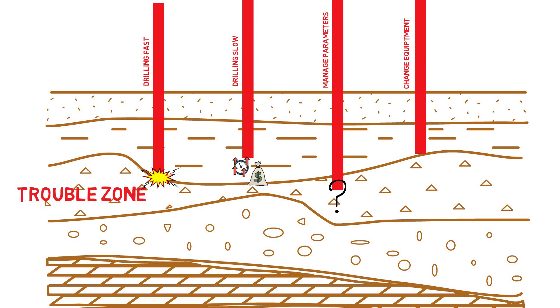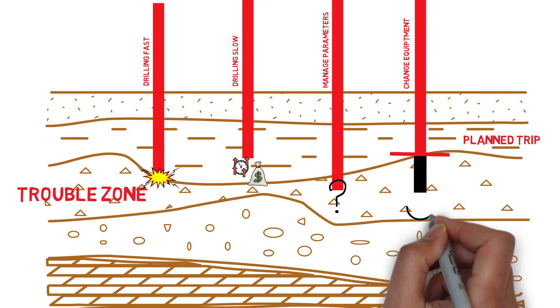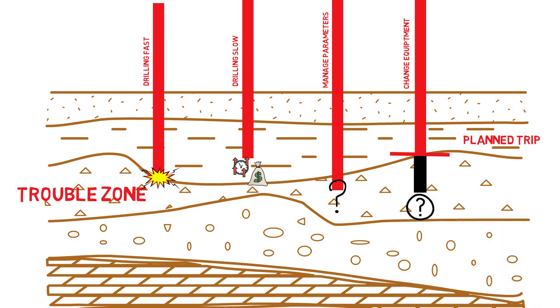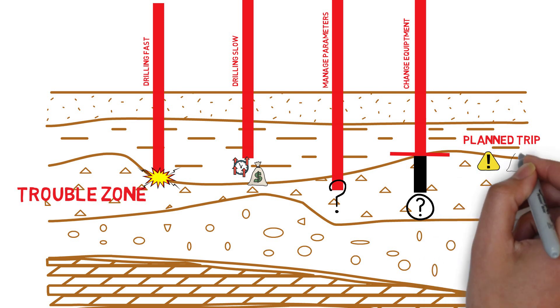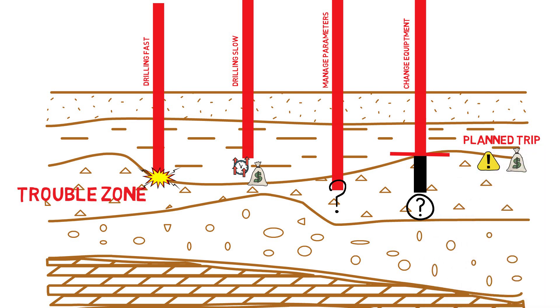Another option is to drill really fast up to the transition zone and then trip out of the hole to change bits. This is referred to as a planned trip. While planned trips are economical in some cases, they are never ideal due to the cost and safety risks associated with tripping.